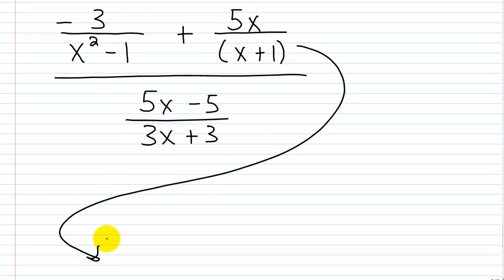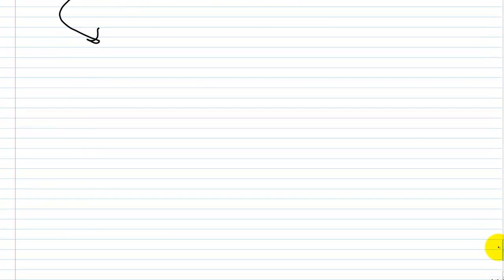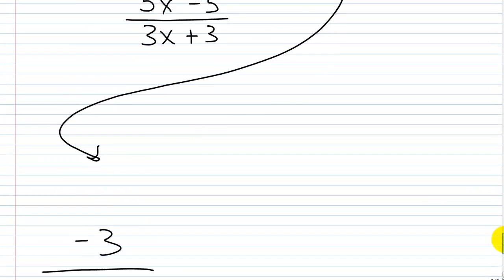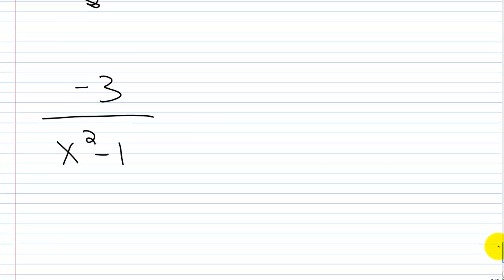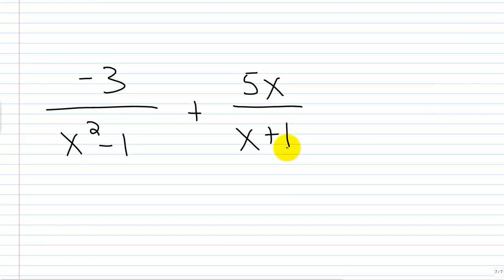So if I kind of work on this down here, what do I got? I got negative 3 over x squared minus 1, and I've got plus 5x over x plus 1. So basically this is just adding rational expressions. It's pretty simple, right? We need to get an LCD first.